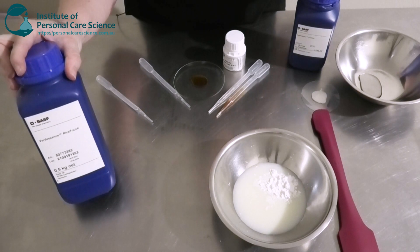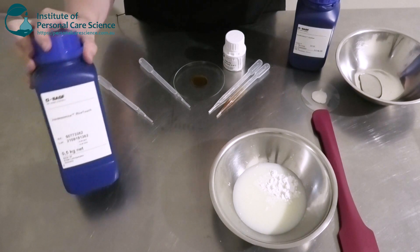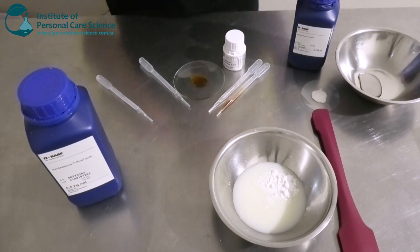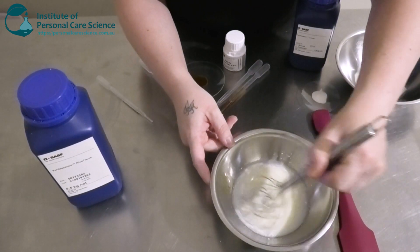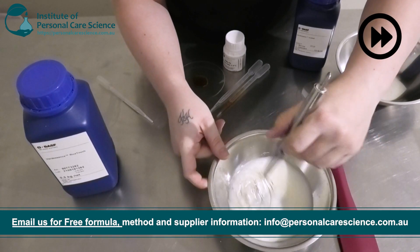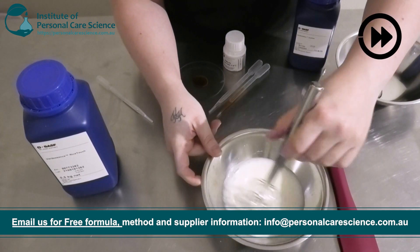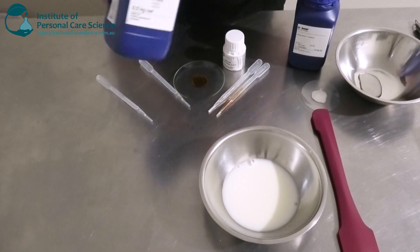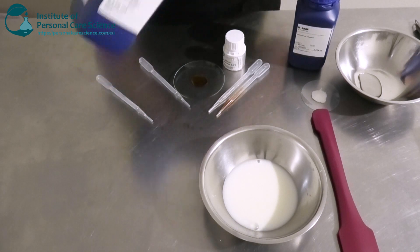This is one of the few of the Verdescence range that has been released from BASF. They're quite new and they're really good materials and they also meet the natural criteria as well. Just going to give that a stir. It's also going to give a nice cushiony feel as well. So mattifying, cushiony, but also oil absorbing as well.